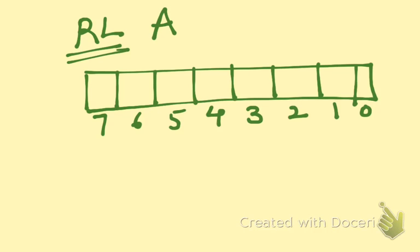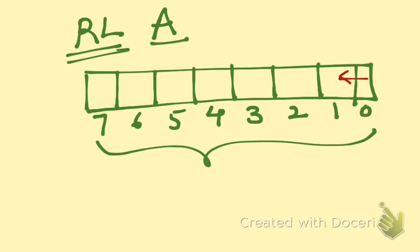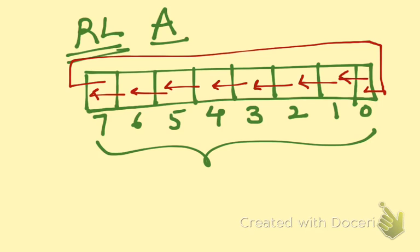So this is my register A, which has eight bits. Now I am using the rotate left operation, which means each bit in this register A is shifted to the left. The bit in zero goes to one, the bit in one goes to two, the bit in two goes to three, and so on. The data that is stored in the seventh bit is transferred to zero. This is how the rotate left operation works.